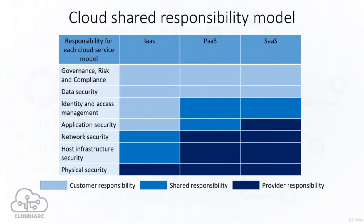For platform as a service, the cloud service provider's responsibilities are broader, including security configuration, management, operation monitoring, and emergency response of infrastructure. The service provider also has responsibility for security of virtual networks, the platform layer security, such as security of operating systems and databases. You, as a PaaS customer, are responsible for data security and application security. In the software as a service tier, the cloud service provider has responsibility for security of the application and all underlying components, while the SaaS customer is responsible for data security and endpoint device protection. Some areas are marked as shared responsibility between you as a customer and the cloud service provider, depending on the type of service.